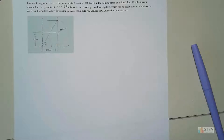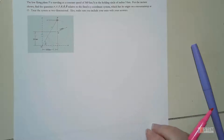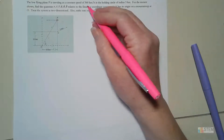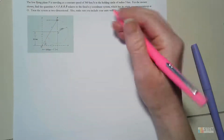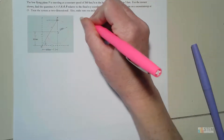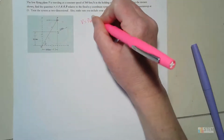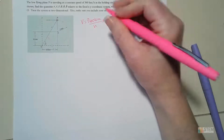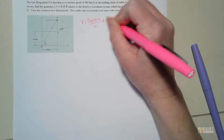First thing I want to do is convert our velocity to meters per second — it's in kilometers per hour, and usually you want to use meters per second. So V is 360 kilometers per hour. We know there are 1000 meters per kilometer.